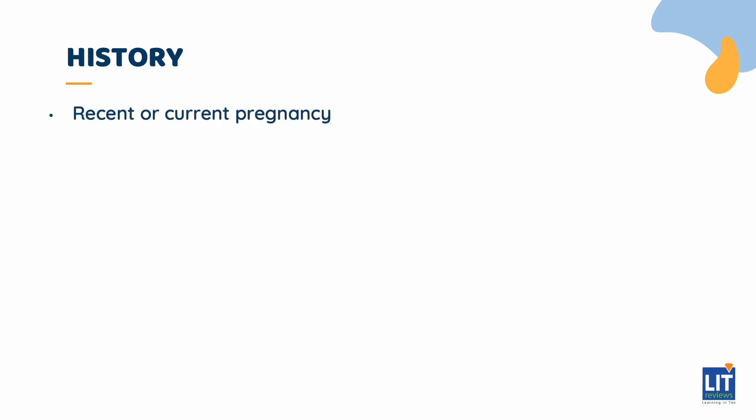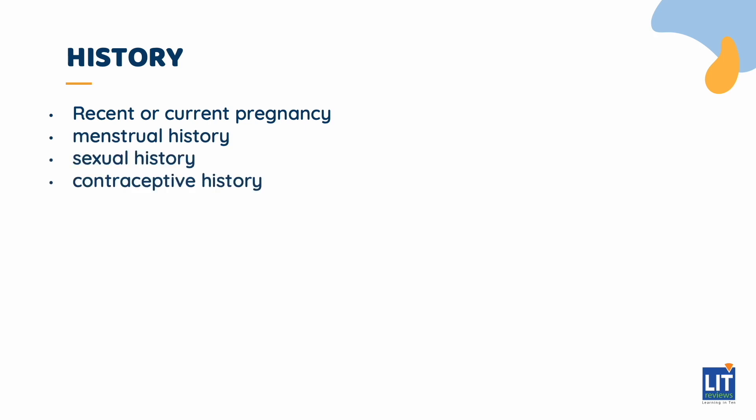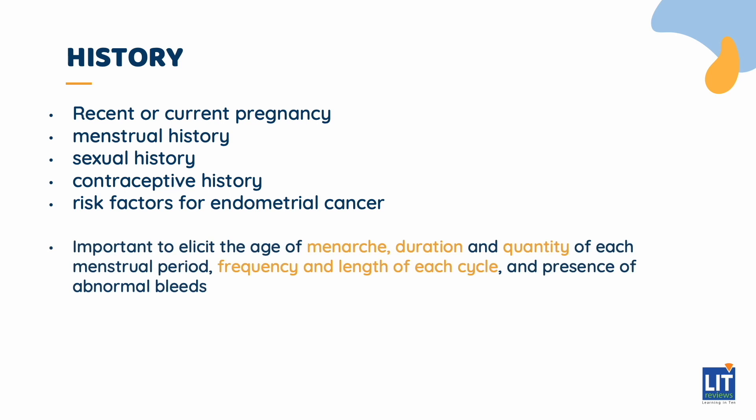Taking a history: first, complete a gynecological and obstetric history. This includes recent or current pregnancy, thorough menstrual history, sexual history, contraceptive history, and risk factors for endometrial cancer. For the menstrual history, it is important to elicit the age of menarche, duration and quantity of each menstrual period, frequency and length of each cycle, and presence of abnormal bleeds such as intermenstrual bleeding, post-coital bleeding, and dysmenorrhea.